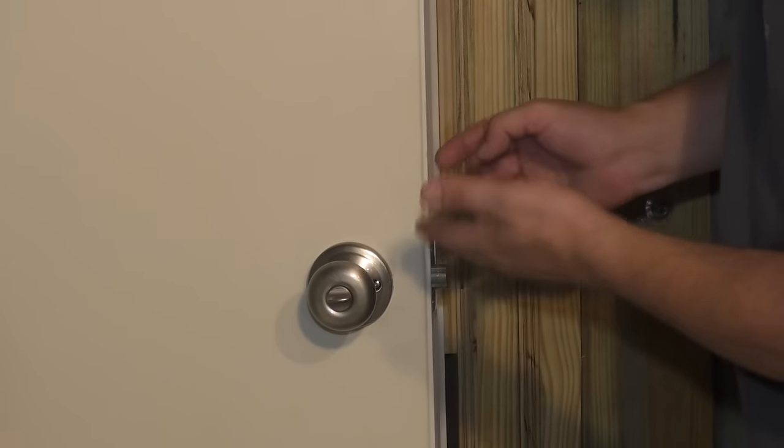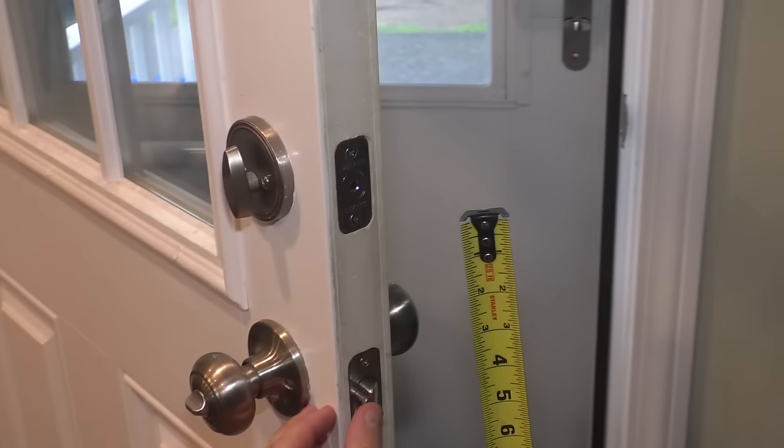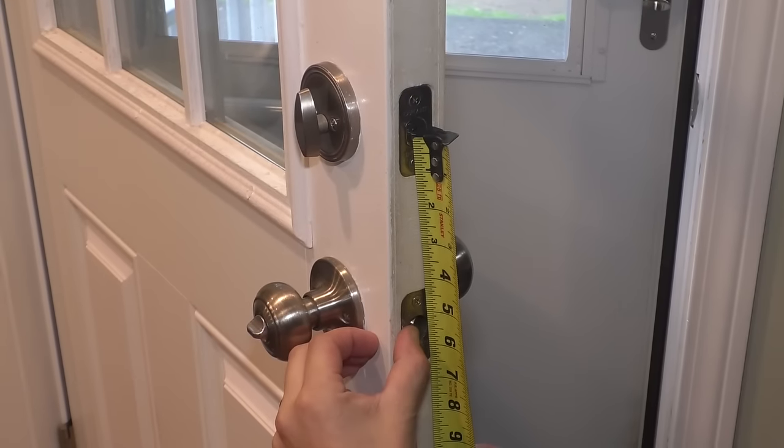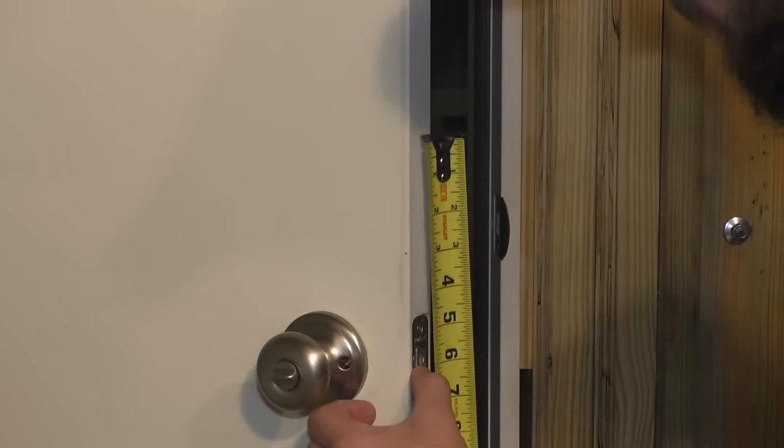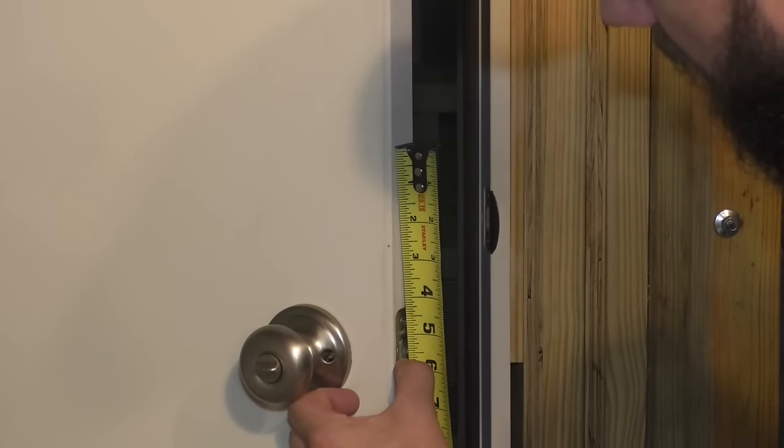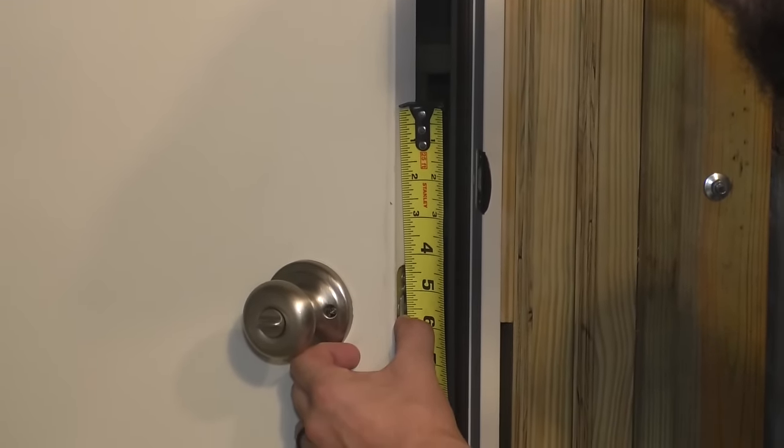So in order to figure out where the deadbolt's going to go, what I did was measured my back door that has a deadbolt on it, and I just measured center to center of where the doorknob and the deadbolt are, and that ended up being five and a half inches. So that is where I'm going to be putting the deadbolt.